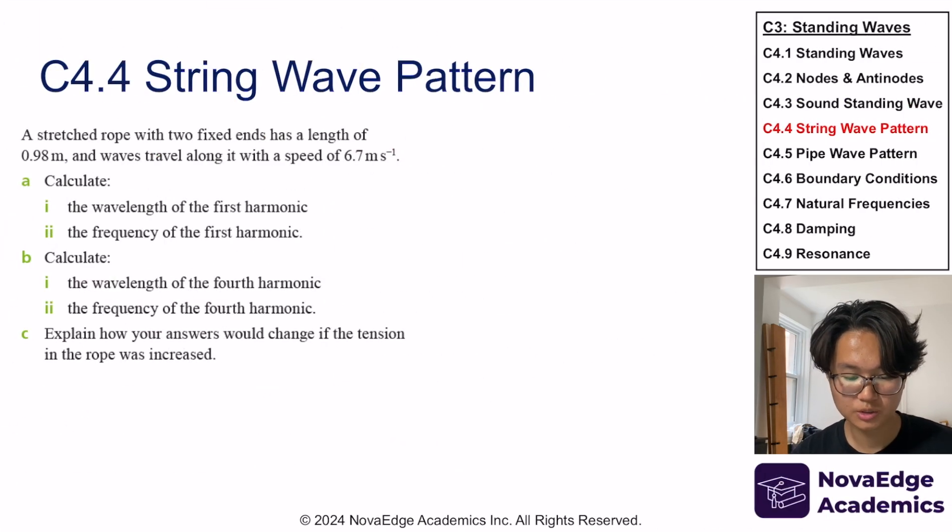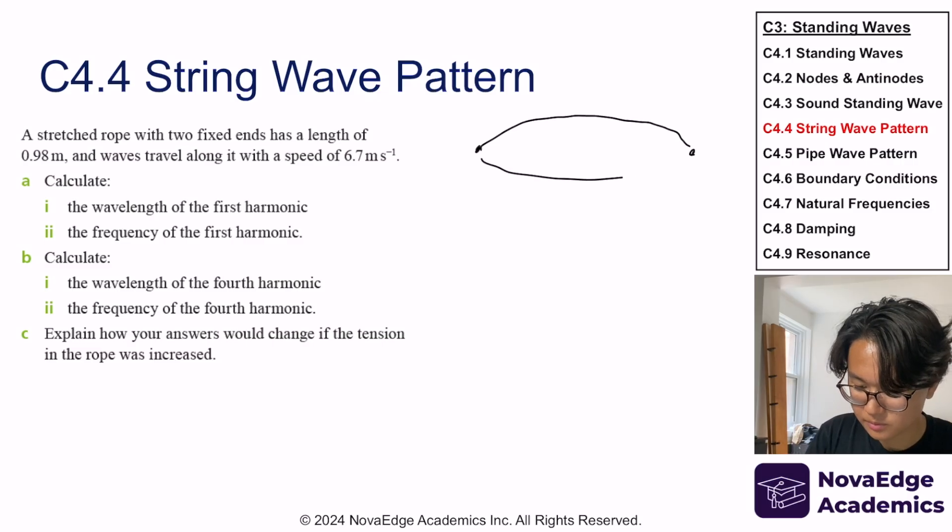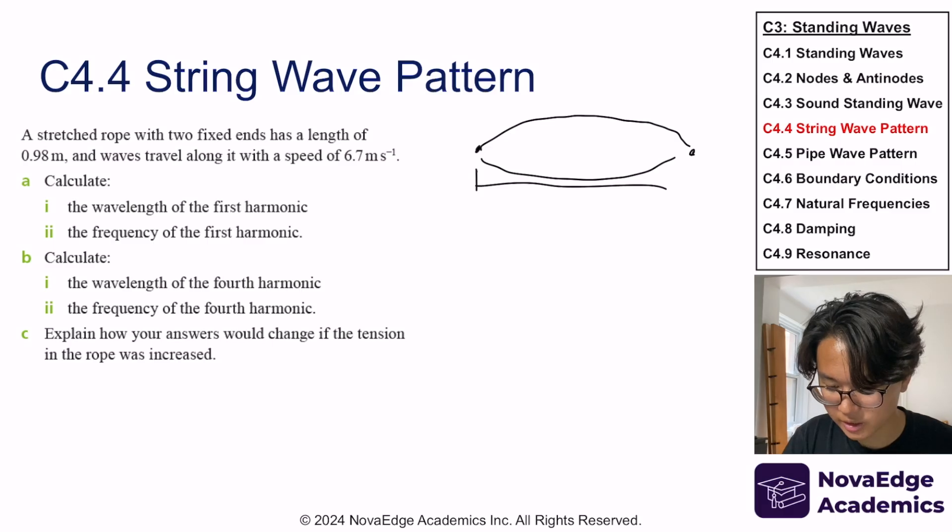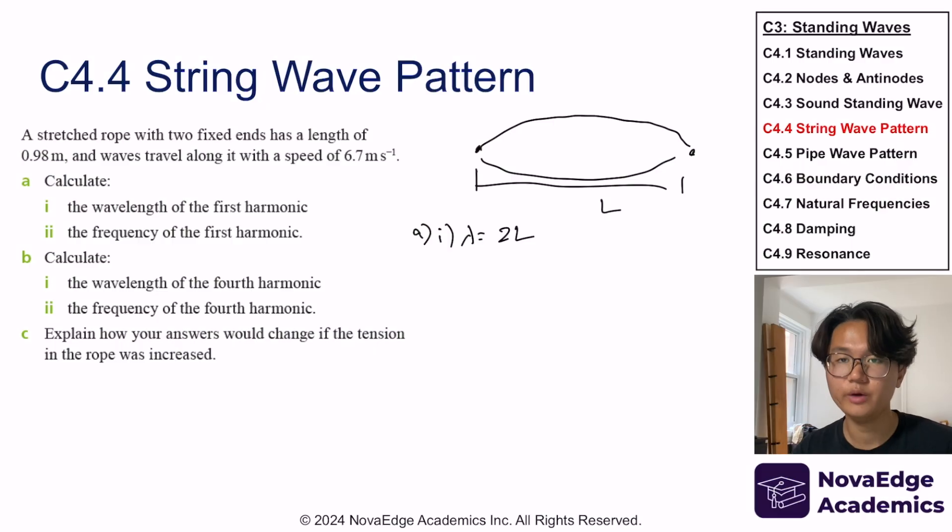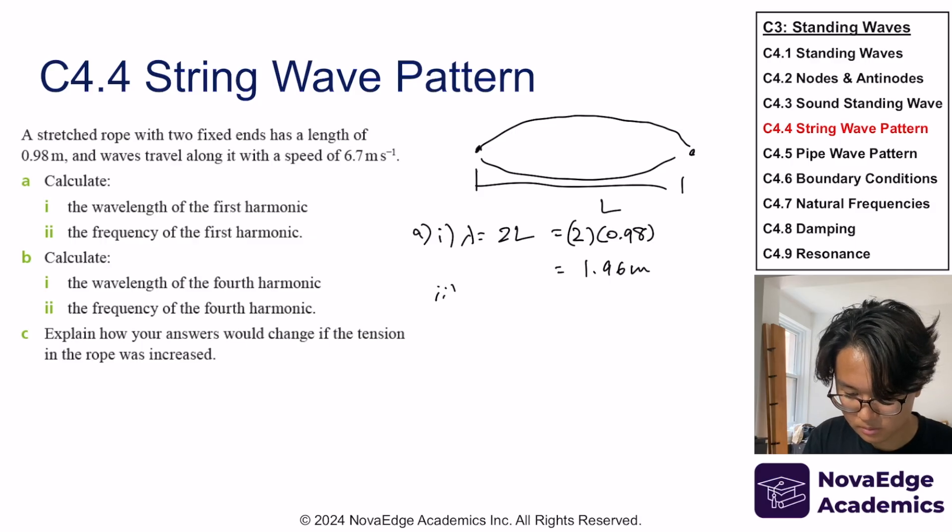Now let's do some practice problems. So pause the video and give this one a try. Okay, so first important thing about all these wave things is to draw it out. So first harmonic, how does it look like? It just looks like this. We've already covered this, and this is length L. So if I want to do part A, the wavelength is equal to two times length L, because I know this is half a wavelength. L is half a wavelength. So wavelength is equal to two times length L, which is just two times 0.98.